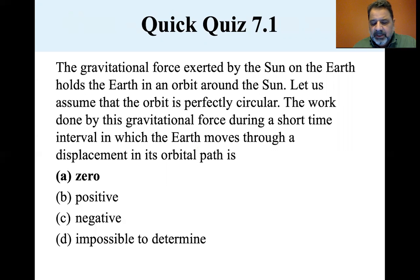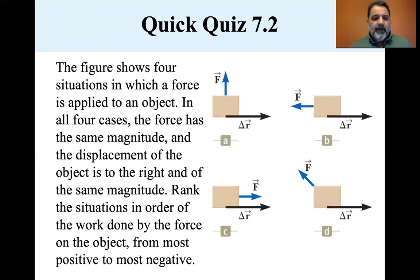So the cosine theta between the displacement and the force is equal to zero. So zero work is done by the gravitational pull of the sun on the earth.